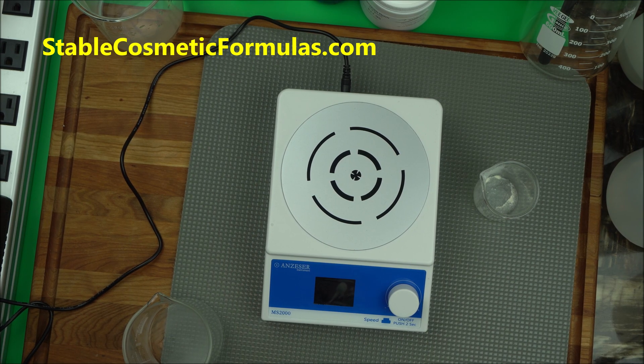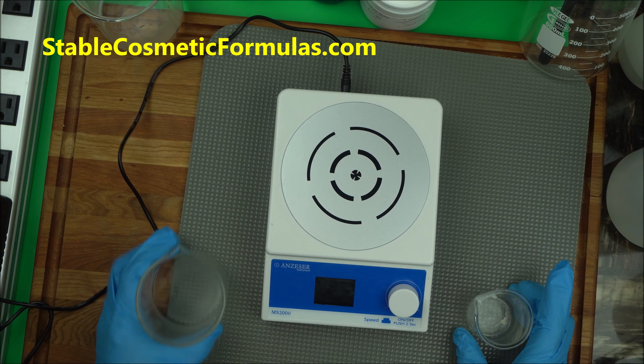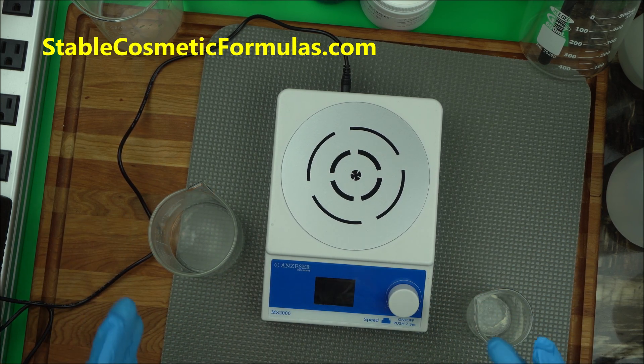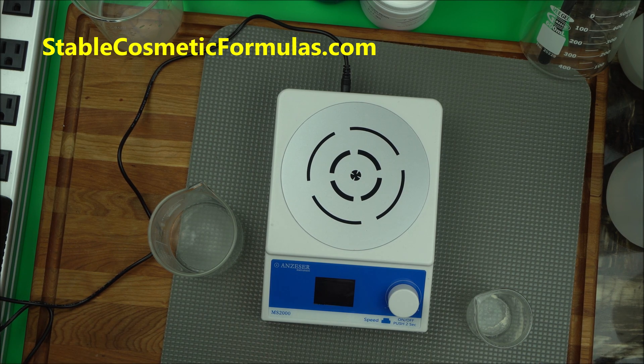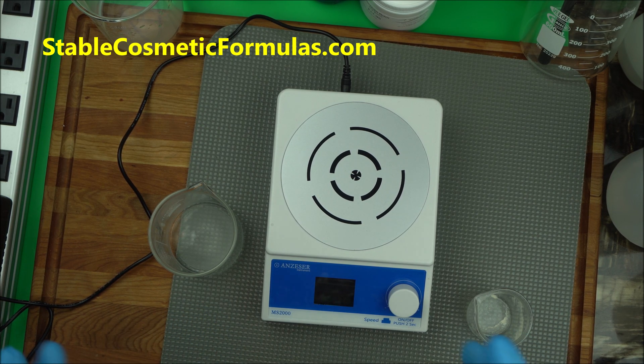Hello everybody, how are you today? In this video I'm going to show you how to blend your gum with a magnetic stirrer. A magnetic stirrer will do a better job of blending your gum because it has strong vortex.